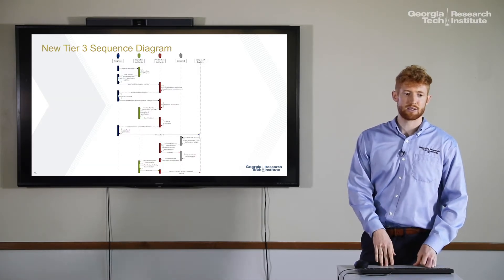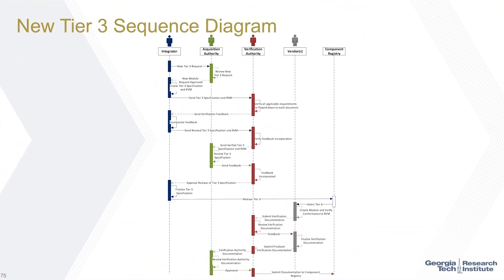There's a sequence diagram that goes through how a new tier three is created. The acquisition authority, such as a program office, has a system they want to build and goes to an integrator who designs that system. Hopefully the integrator utilizes existing tier threes and existing modules within the component registry, but there will be situations where no component exists that meets the needs of their system, so they'll need a new tier three. They request to the acquisition authority that a new tier three be created, and the acquisition authority must verify there's nothing similar in the component registry. Once approved, the integrator creates the tier three, and it goes through back and forth between the acquisition authority, verification authority, and integrator until it is approved for release.